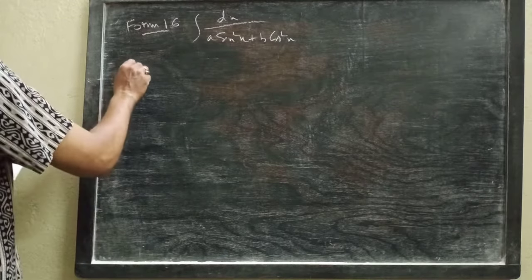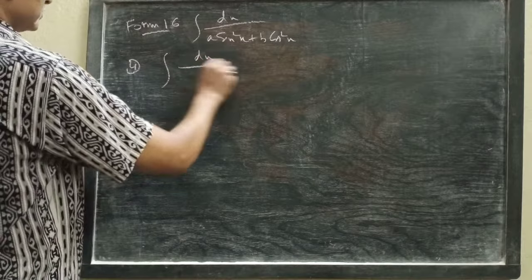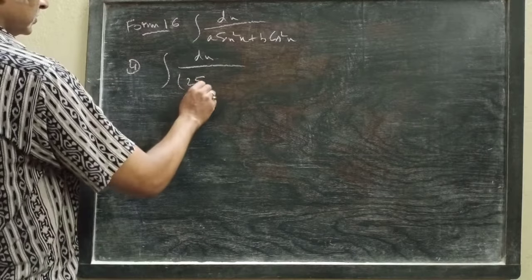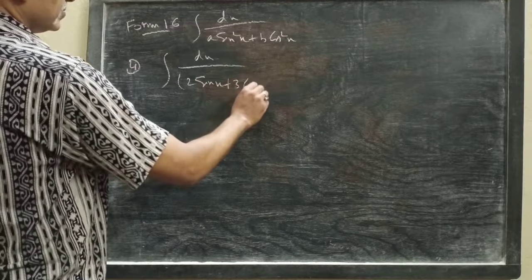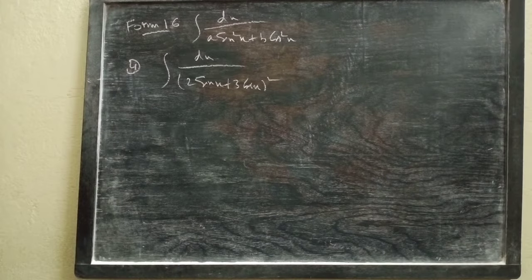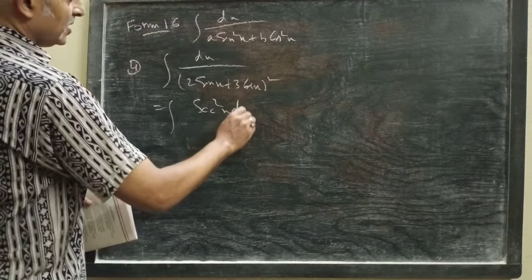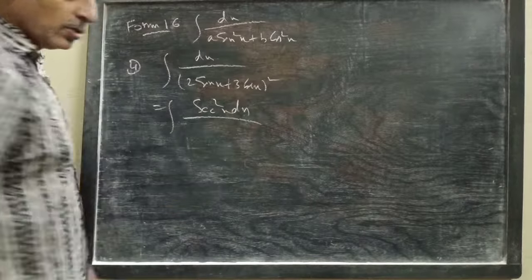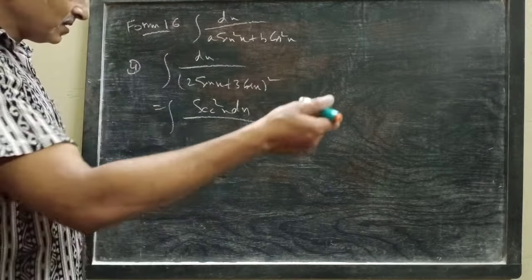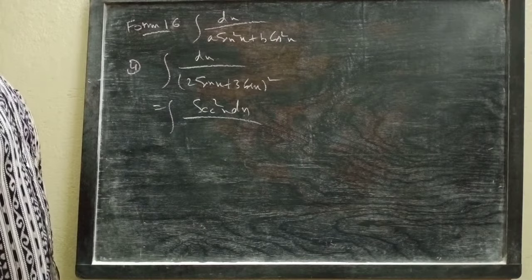Number 4: integration of dx by (2·sin x + 3)². Now multiply both numerator and denominator by sec²x. You get sec²x dx in the numerator. Since the denominator has a whole square, when we multiply by sec²x, the factor sec x enters within the bracket.